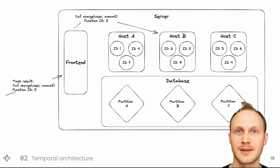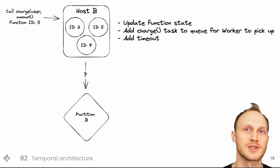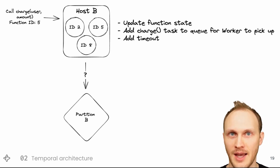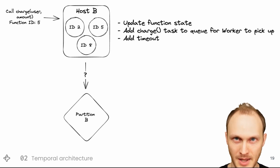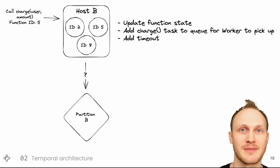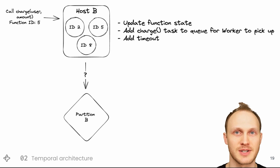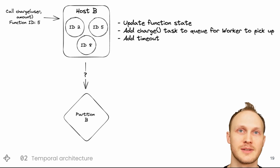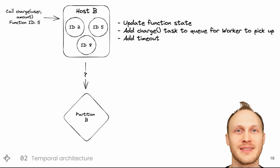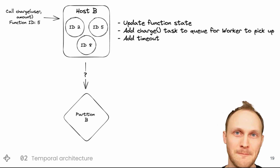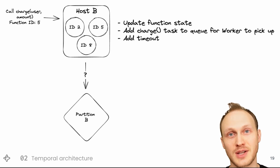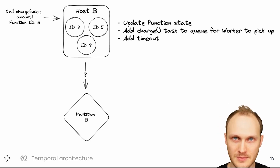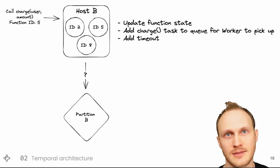Now let's zoom in on just host B and partition B. When host B gets the message to call charge, it needs to do three things: update the state of the function, add a charge task to the queue so that a worker can pick it up and execute it, and add a timeout. There are many types of timeouts that might be set — in this case, it might be the maximum length of time the charge function can be tried and retried before we consider it permanently failed, at which point that line of code in the subscription function will throw an error. It's important that all three of these things are done together atomically, because otherwise you'll run into various sorts of race conditions and inconsistencies. We use a single partition logged batch statement to get atomicity and isolation.